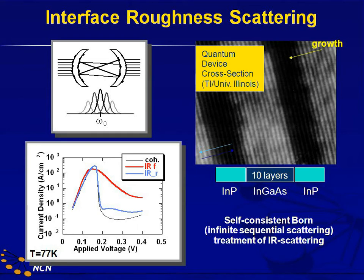In the forward and reverse bias direction, you might have different IV curves. In one direction where you see a lot of interface roughness, you see a lot of scattering in the valley current. In the other bias direction where the material looks kind of flat, you see only very little interface roughness scattering. I'll make this quantitative against experiments in a little while.